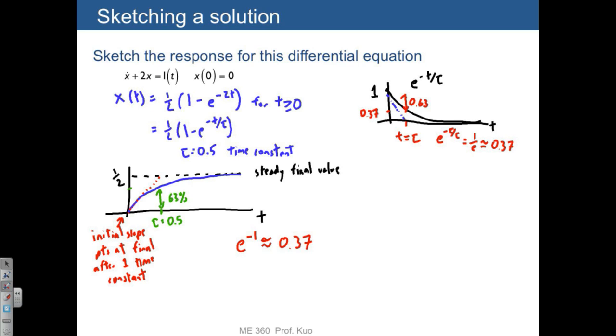Another thing that's kind of helpful is that e to the negative 4.6 is approximately 0.01. So in other words, after 4.6 time constants, the response has gone 99% of the distance it's going to travel.